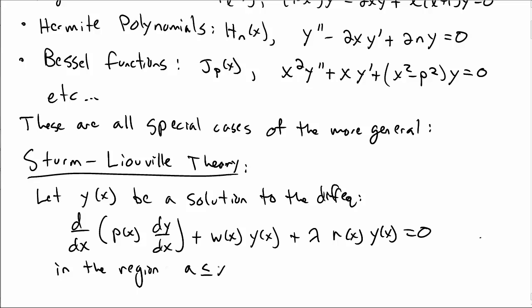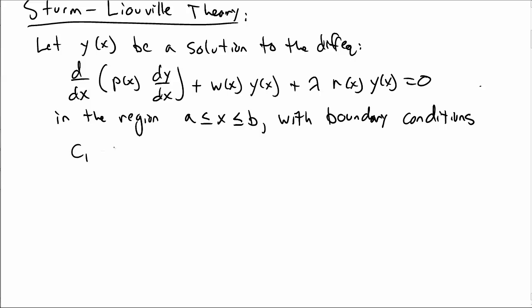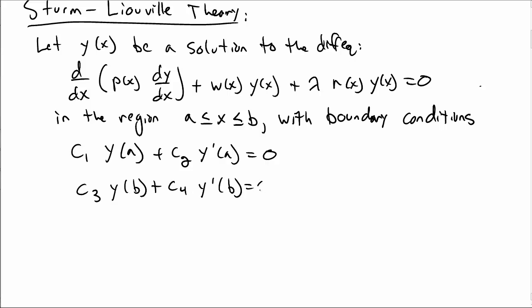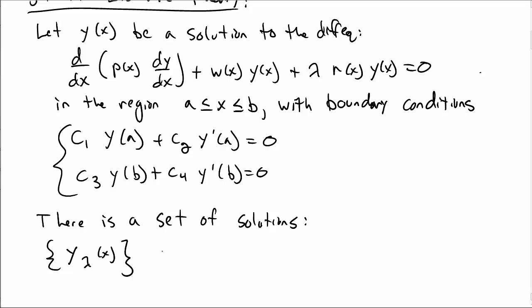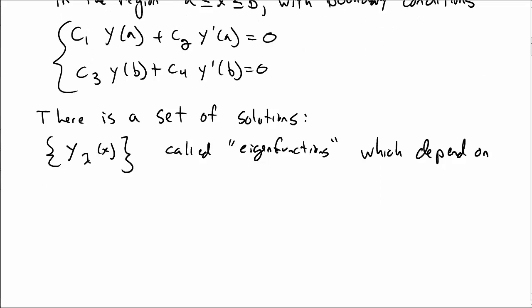This holds in the region x between a and b. We also impose boundary conditions on y(x): at the first boundary x = a, some combination of the function and its first derivative must vanish, and at the other boundary x = b, some other combination of the function and its first derivative must vanish. It turns out there is a set of solutions to this type of differential equation, which we call y_λ(x), and these are called eigenfunctions. They depend on the value λ in the differential equation, and we call the set of these λ values eigenvalues.